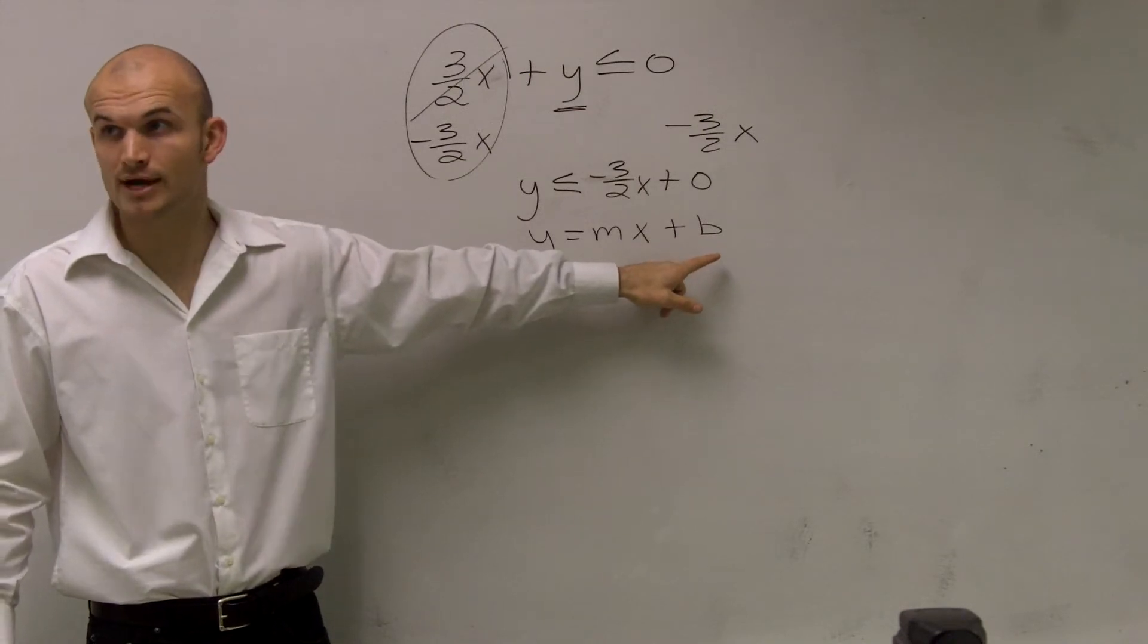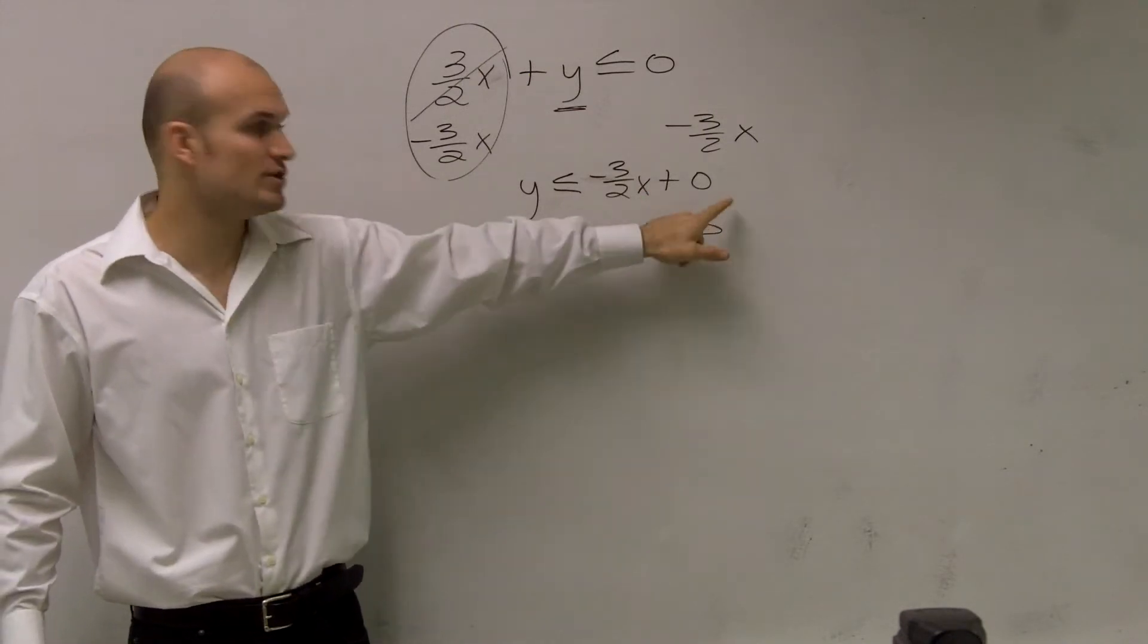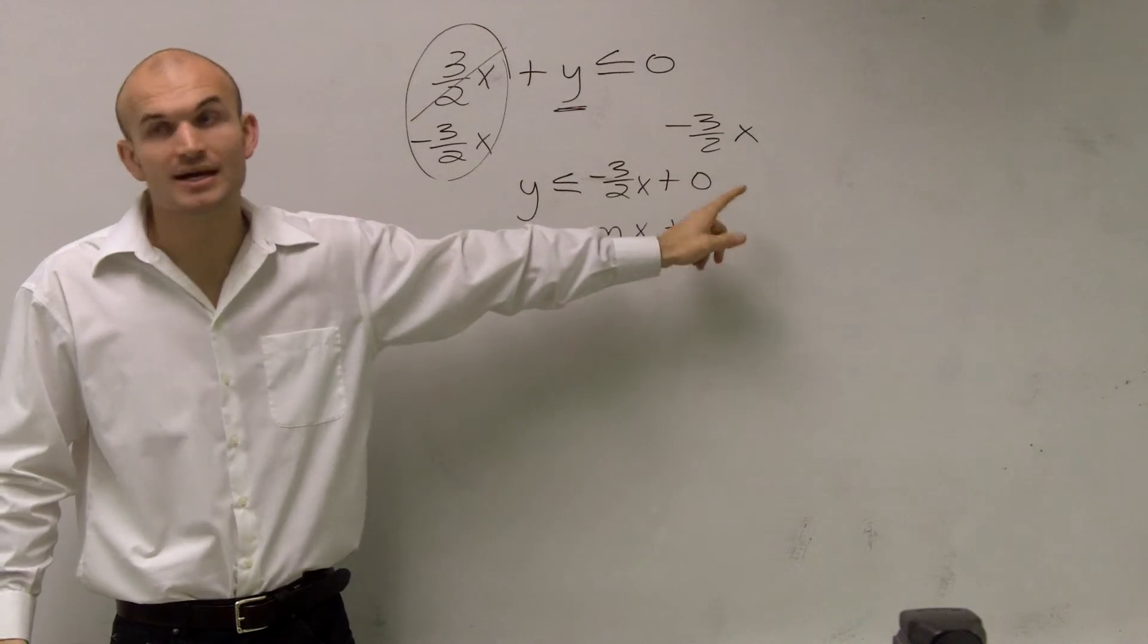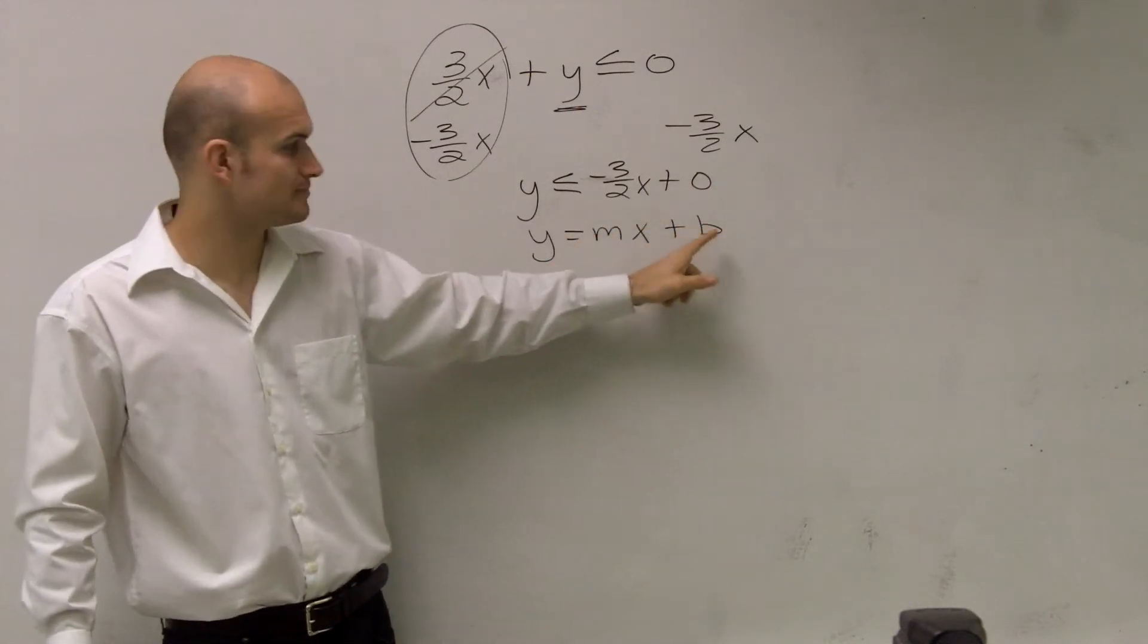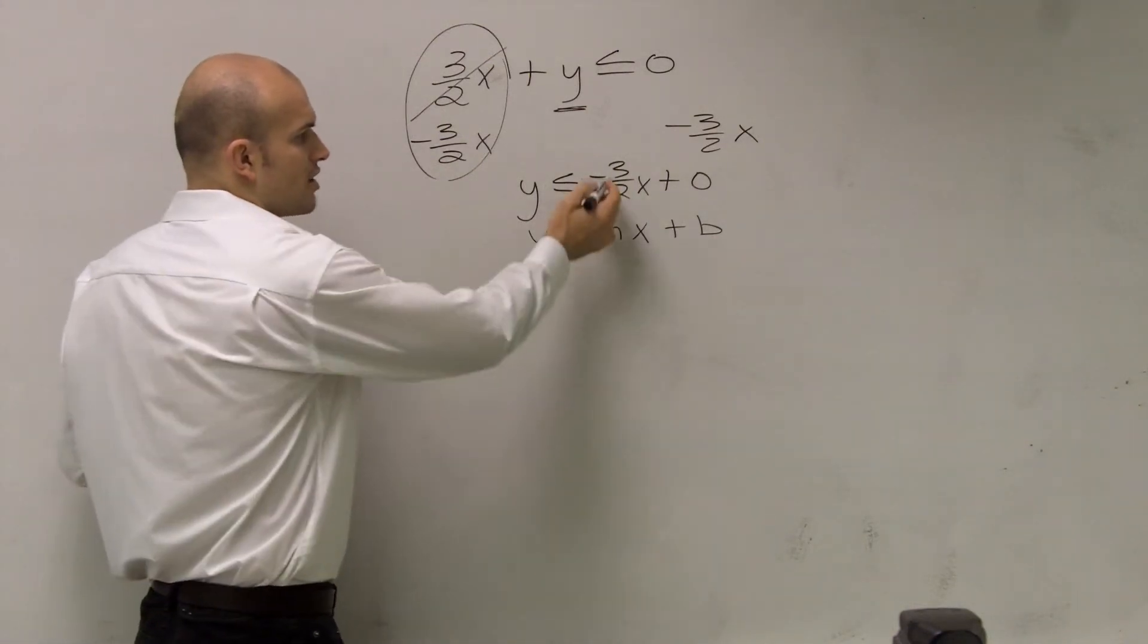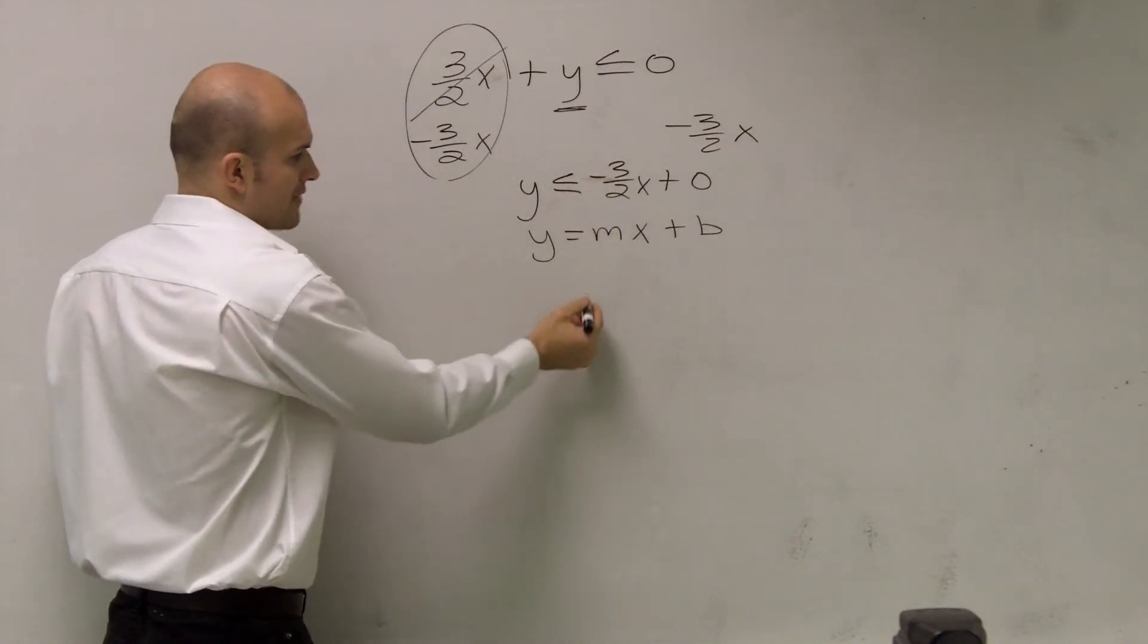It's at 0. Because you can always write, if there's no number there, you can always write plus 0. It's not going to affect the graph. So you can say mx plus b, which is 0. Therefore, our slope is now going to be negative 3 halves.